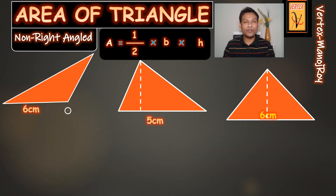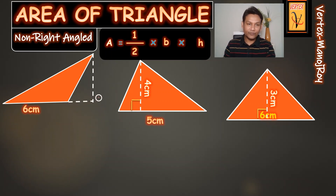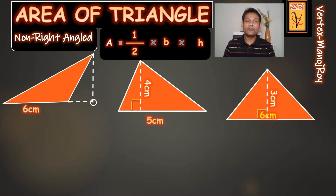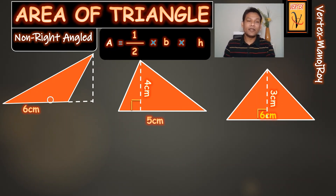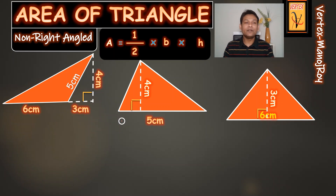But when you look at an obtuse triangle, how can you draw a line from the base to get the height? For this reason, I have to draw an imaginary line — I have to extend the base because the definition of height of a triangle is: from the base to the third vertex perpendicularly, that distance is the height. So this angle here is 90 degrees. So we can have three types of non-right angle triangles.